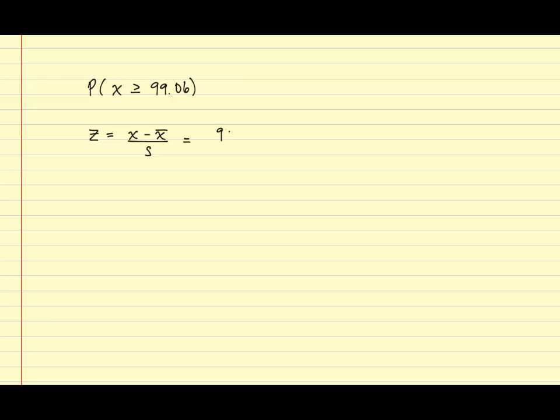And plugging in the information, x is equal to 99.06, x-bar was 81, and s was 6.02. And we obtain a value of 3. So, we've converted x being greater than or equal to 99.06 to a z. We're now trying to find the probability that z is greater than or equal to 3.